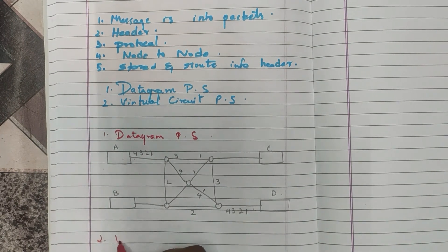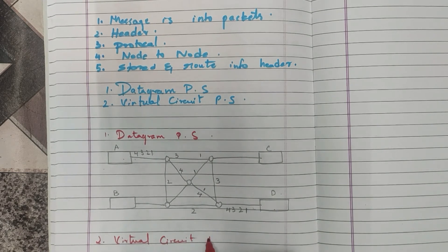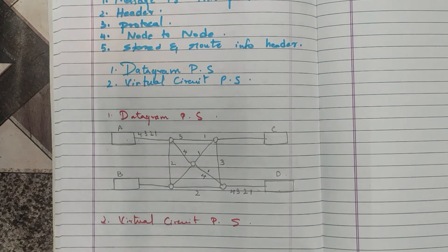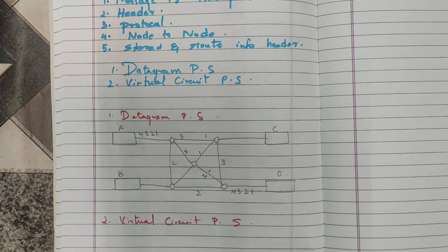Now let's move on to virtual circuit packet switching. In this, there are three phases: the setup phase, the teardown phase, and the data transfer phase. A virtual circuit is a logical connection set up between the sender and the receiver before any data transfer takes place. This approach maintains a relationship between all packets belonging to the same message.